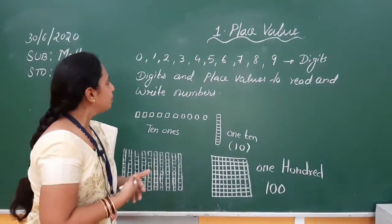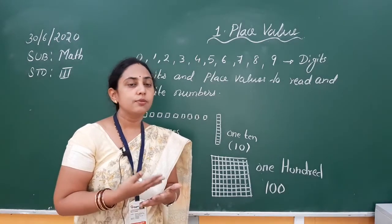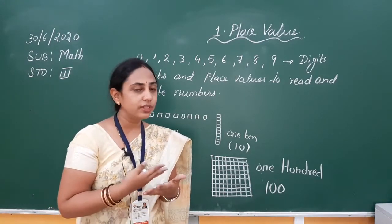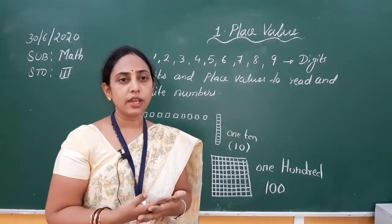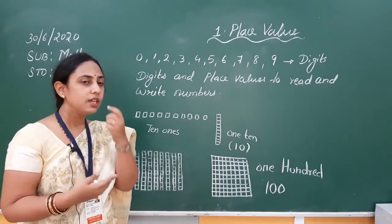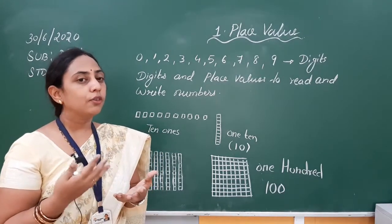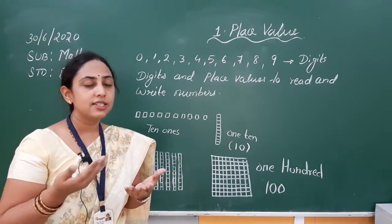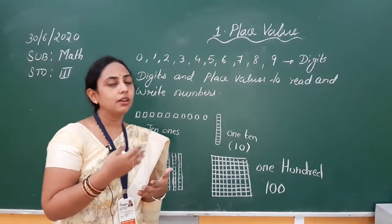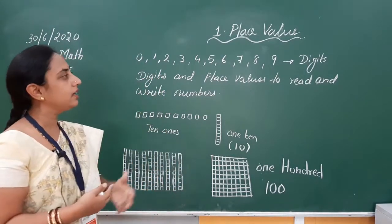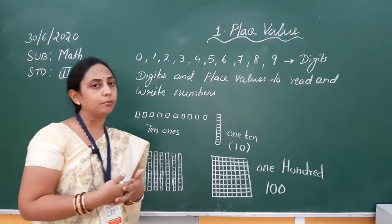In place value, how many digits do we have generally? We have the digits from 0 to 9. These are all called single digit numbers, or we can say one digit numbers. There are totally 9 digits, and if you see other numbers like 11, it is 1 and 1; 31 is 3 and 1; 46 is 4 and 6. So we can see that the digits 0 to 9 are the basic digits used to write and read all numbers.